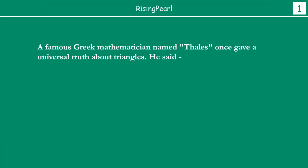Once a very famous Greek mathematician named Thales gave a universal truth about triangles. Universal truth means a fact that is always accepted as true everywhere in the world. Something like sun rises from the east and sun sets in the west — no matter where you are in the world, this fact is always true. That's what it's called a universal truth.